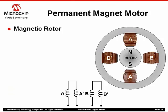Each winding, although one entity, will be subdivided. I've labeled winding A, for example, as A and A prime. Winding B as B and B prime. Keep this in mind as we continue through this web seminar.